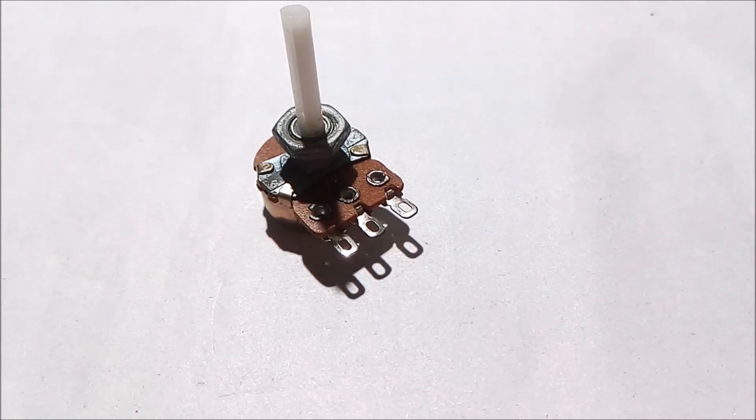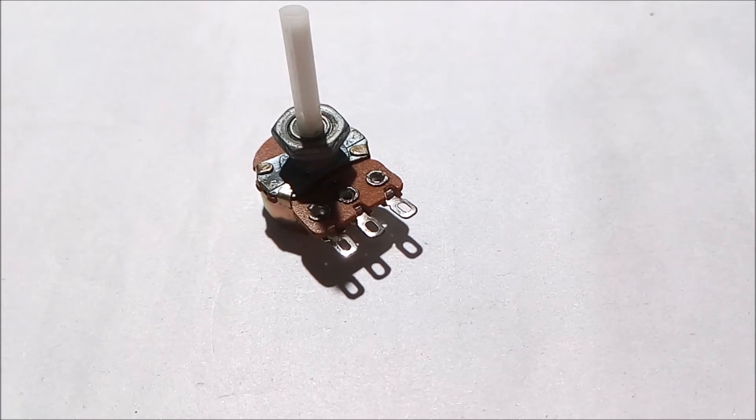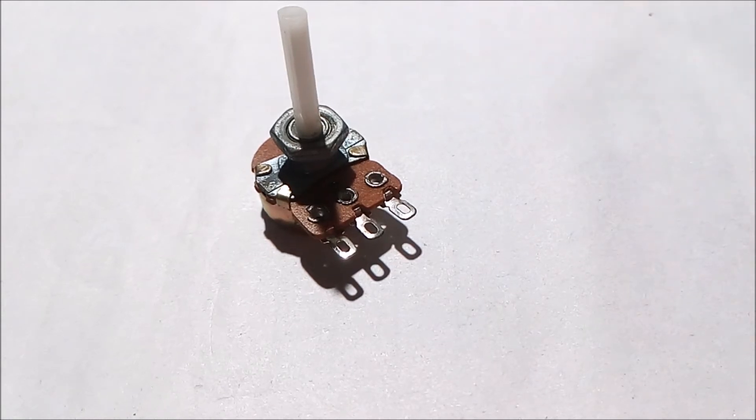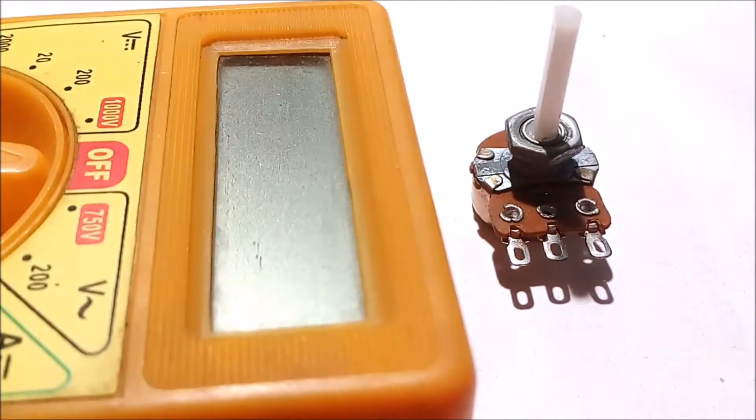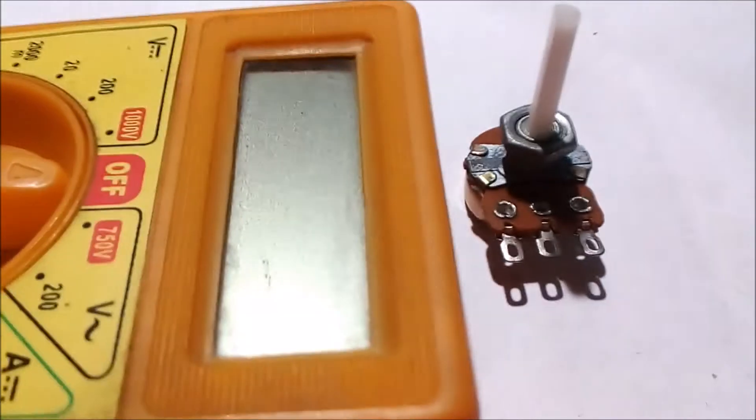Now we are going to use a multimeter to check the variable resistor. This is the multimeter by which we are going to check the variable resistor.